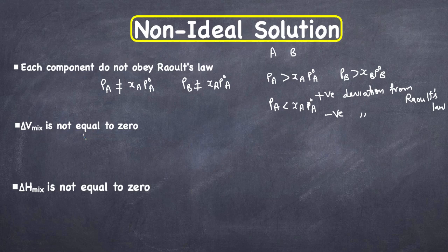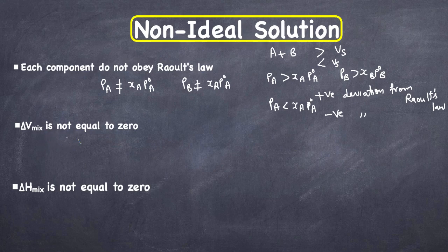Another characteristic is the change in volume. When we mix the two components, the volume before mixing may be either greater than or less than the volume of the resulting solution. So the change in volume, ΔV_mix, is not equal to zero.